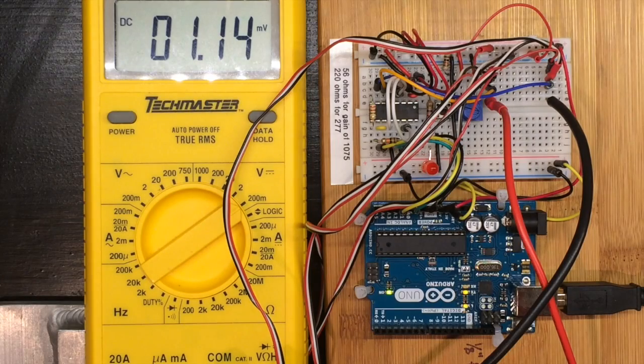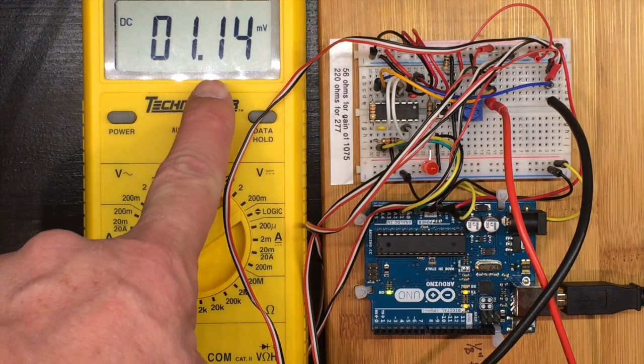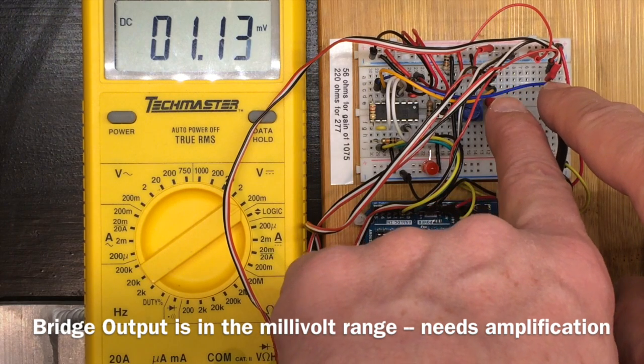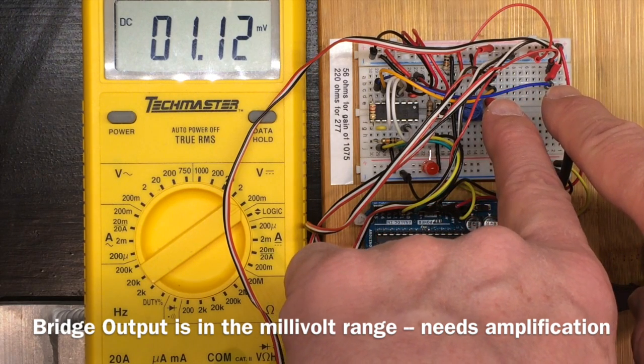With the bridge hooked up, I've got a very small voltage, about 1 millivolt, across the bridge on the measurement here. I'm going to need to amplify that with the amplifier.